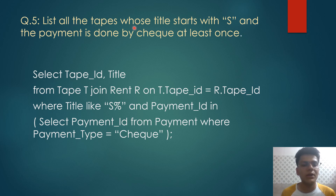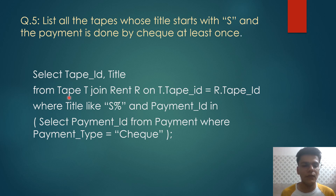The fifth query is to list all the tapes whose title starts with 'S' and the payment is done by check at least once. We have used the concept of a nested query — a query within a query. The inner query selects payment ID from payment where payment type is 'check', returning all payment IDs where payment type is check. The outer query selects tape ID and title from tape joined with rent on tape ID, where title like 'S%' — the percent is a wildcard — and payment ID is in the nested query result.